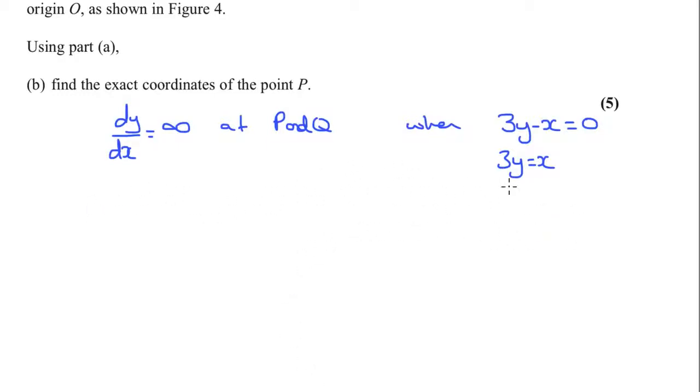We're going to use the equation that we had before, which was x squared minus 2xy plus 3y squared is equal to 50. Then I'm going to bring this 3y is equal to x in, and any time I see an x, I'm going to write 3y. So, I've got 3y all squared minus 2 lots of 3y for x times y plus 3y squared equals 50.